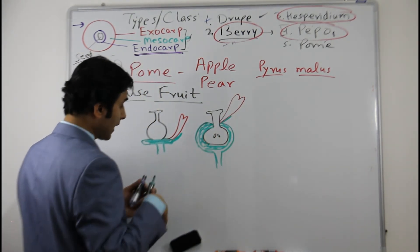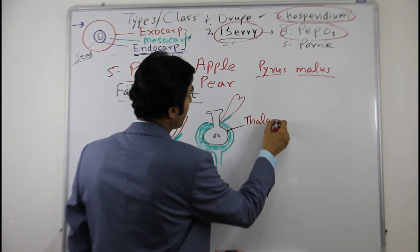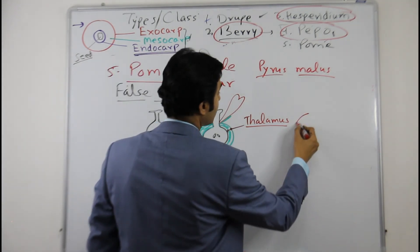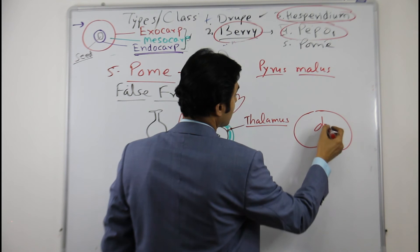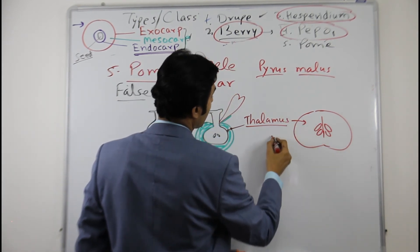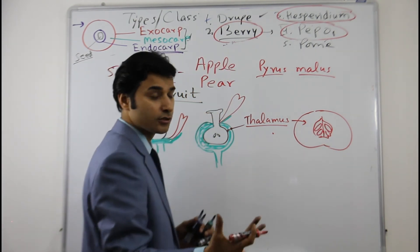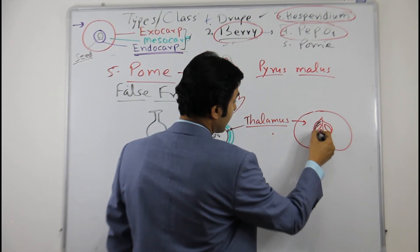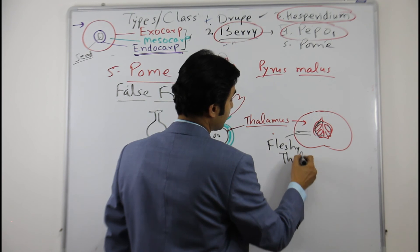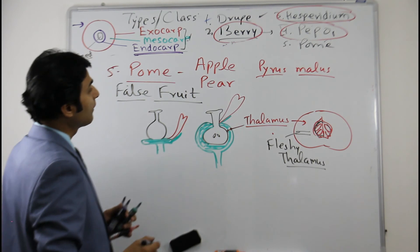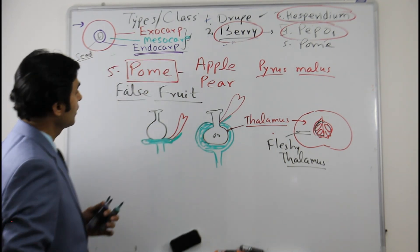So what happens in apple, the fertilization happens and after fertilization, this thalamus swells. This becomes the juicy part which we eat. So this is called as false fruit because ovary seed is here and endocarp is here, this core. But this area which we eat is fleshy thalamus. And this is why the apple and pear are false fruit and the type is pom.